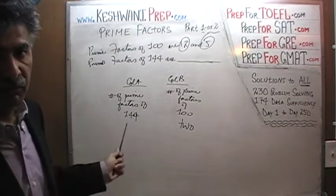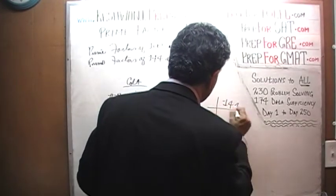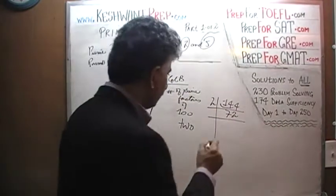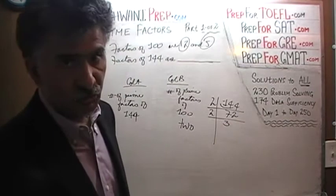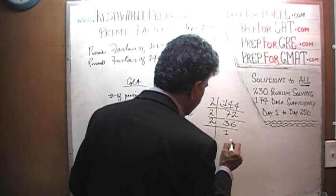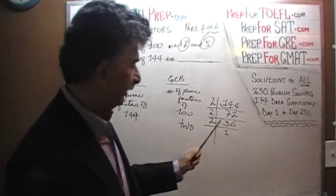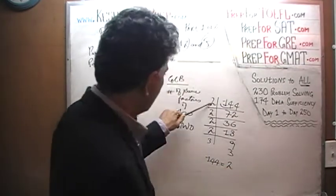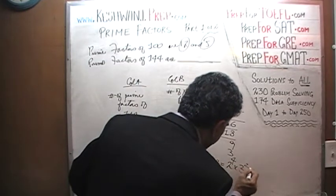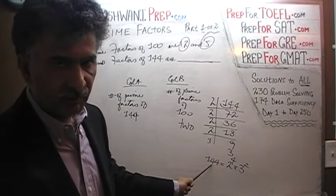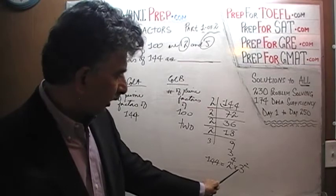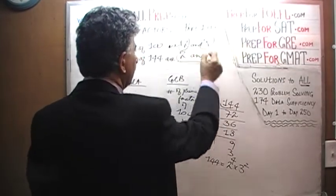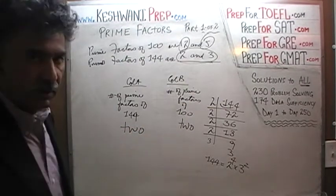144 is an even number, so we divide by 2. There are seven 2's in 14 and two 2's in 4. It's still even, so divide by 2 again. The remaining 1 joins the 2 to become 12, and 12 has six 2's. Divide by 2 one more time: 3 has one 2; the remaining 1 joins the 6 to become 16, and 16 has eight 2's. Dividing once more gives 9, which factors into 3 times 3. So 144 equals 2 to the 4th times 3 squared. 144 has only two prime factors: 2 and 3. Since 100 also has two prime factors, the answer is C — the two columns are equal.